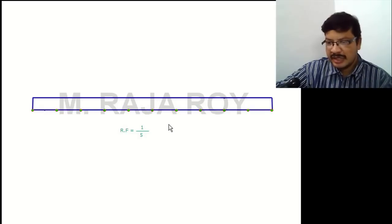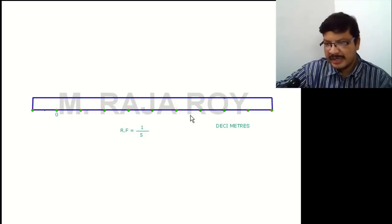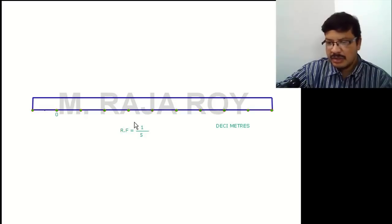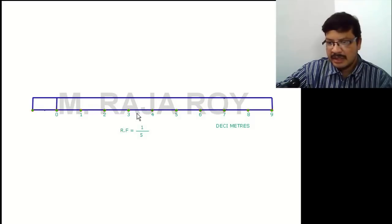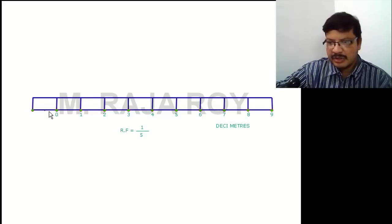These divisions represent decimeters. Place 0 here — don't start at the edge. Towards the right-hand side from 0 you will get the decimeters: 1, 2, 3, 4, 5, 6, 7, 8, 9 — that is 9 decimeters, and this is the 1 decimeter unit. Total length is 10 decimeters. Towards the left-hand side from 0 you will get the centimeters. Draw the vertical lines accordingly. Now divide this small length of 1 decimeter into 10 parts to get centimeters.